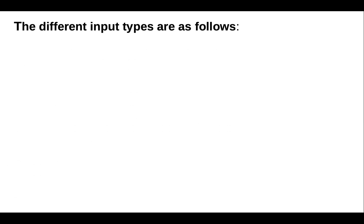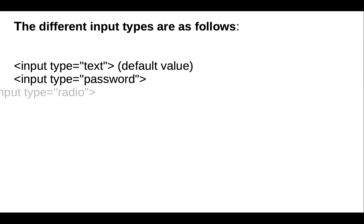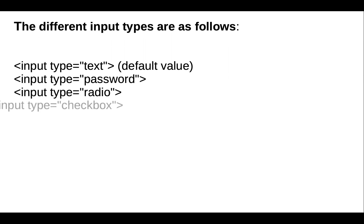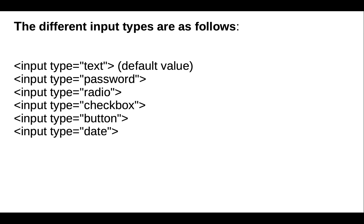The different input type attribute values are: text, password, radio, checkbox, button, and date. Let's take an example — we'll open the Sublime Text editor and start coding.